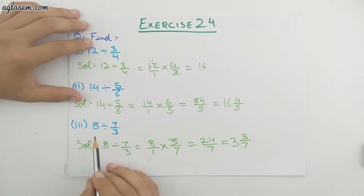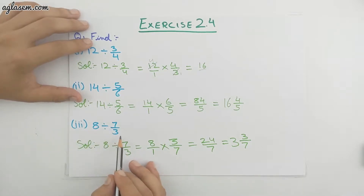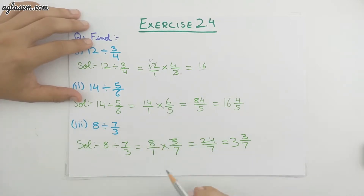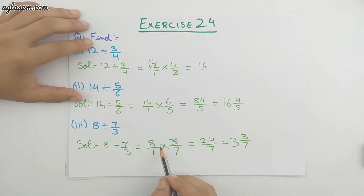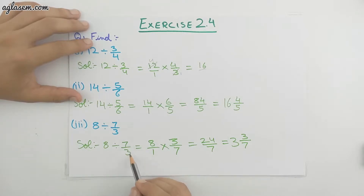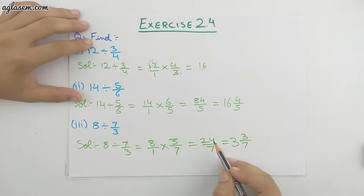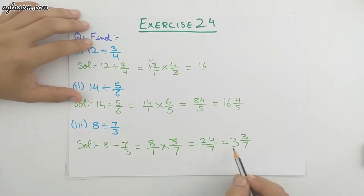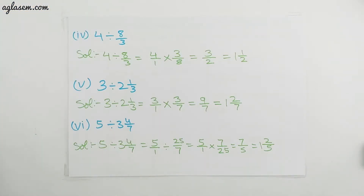The third part is 8 divided by 3/7. The steps are the same for every question. So 8/1 multiplied — the divide sign changes to multiply and 3/7 changes into 7/3. We multiply 8/1 with 7/3 and get 56/3. Wait — actually 8 by 1 with 3 by 7 gives 24/7, which is an improper fraction. We change it into the mixed fraction 3 whole 3/7.